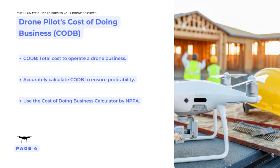The cost of doing business, or CODB, is the total cost incurred to operate our drone business. Accurately calculating CODB is crucial for profitability. We recommend using the cost of doing business calculator by NPPA, which factors in various expenses to give a comprehensive understanding of our operating costs. The calculator link is located in the description section below.